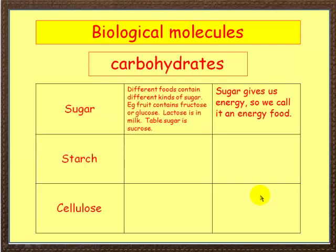Let's look at some of the functions and uses. First of all, sugar. Different foods contain different kinds of sugar. For example, fruit contains fructose or glucose. Lactose is another sugar found in milk, and the stuff you put in your tea or coffee is called sucrose. And why do we need it? Well, sugar gives us energy, so we tend to call it an energy food.